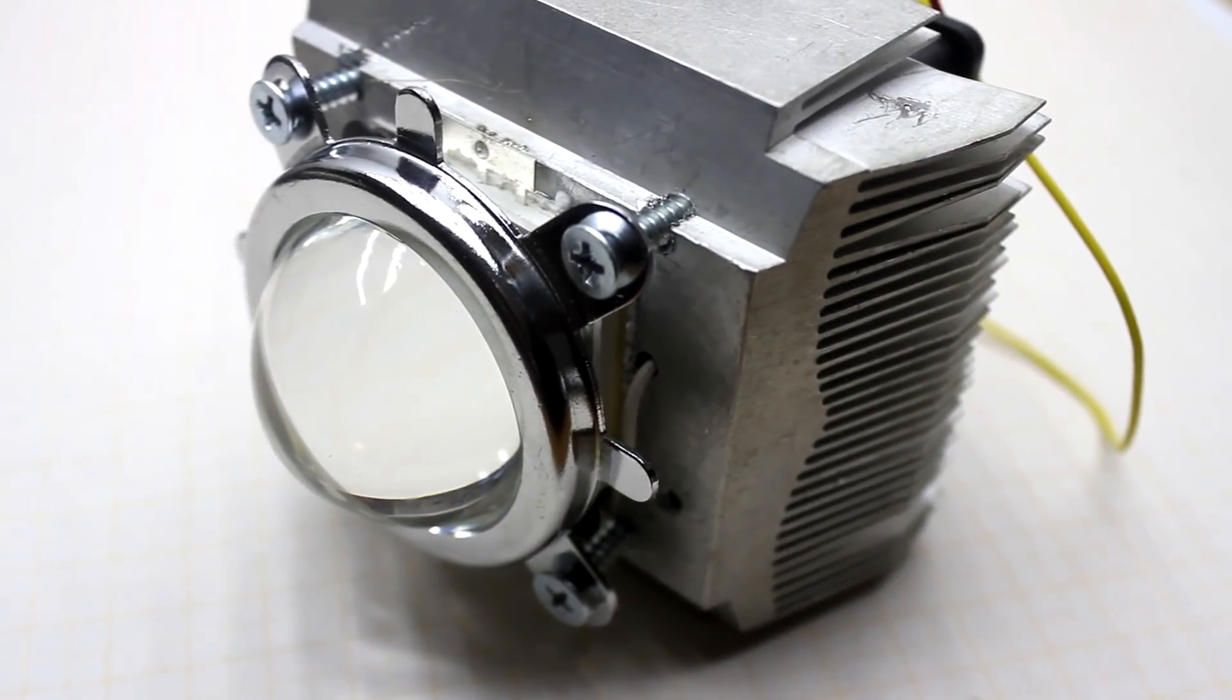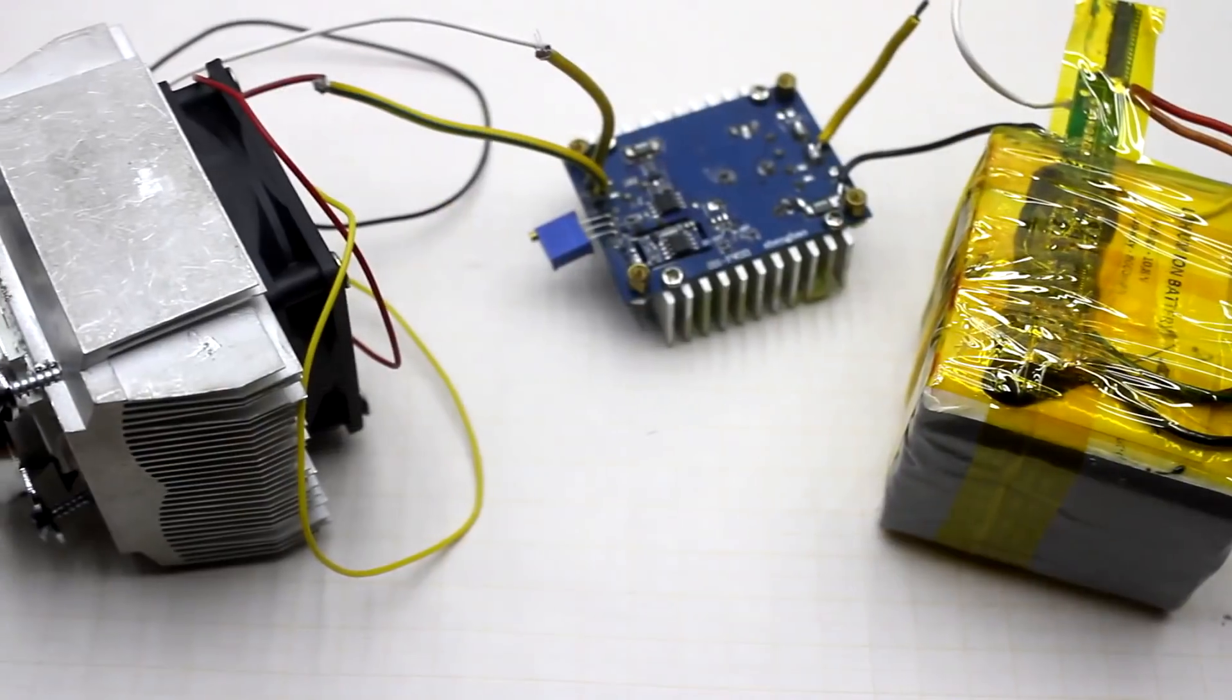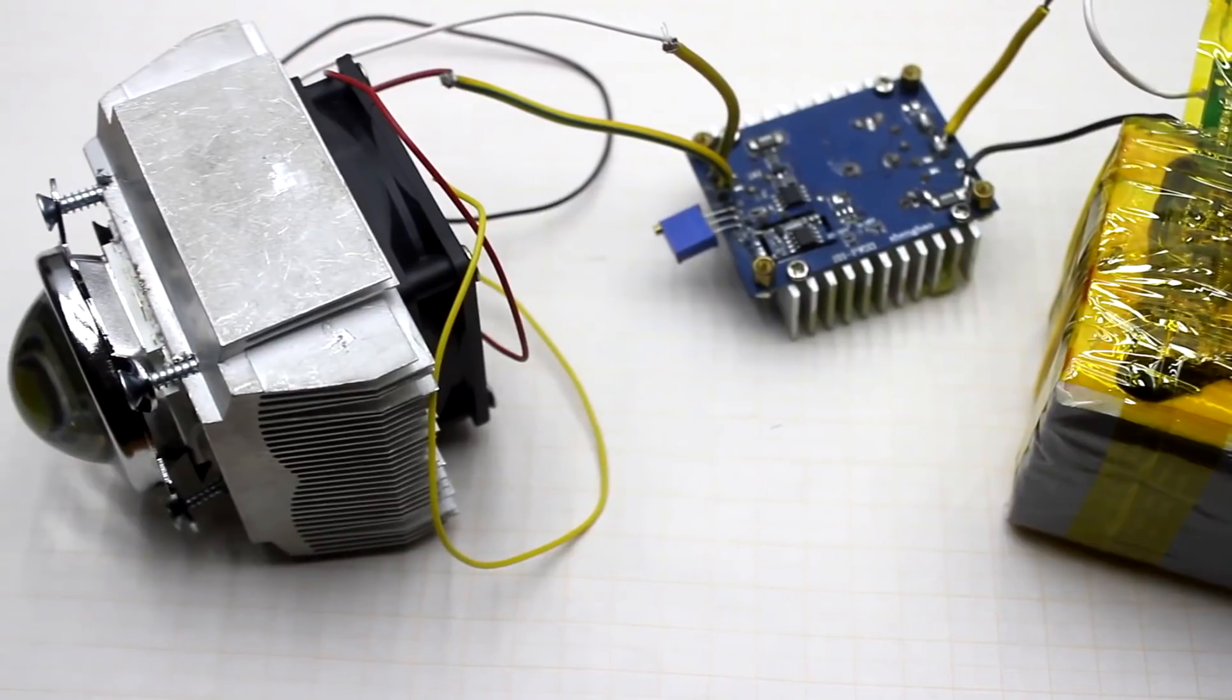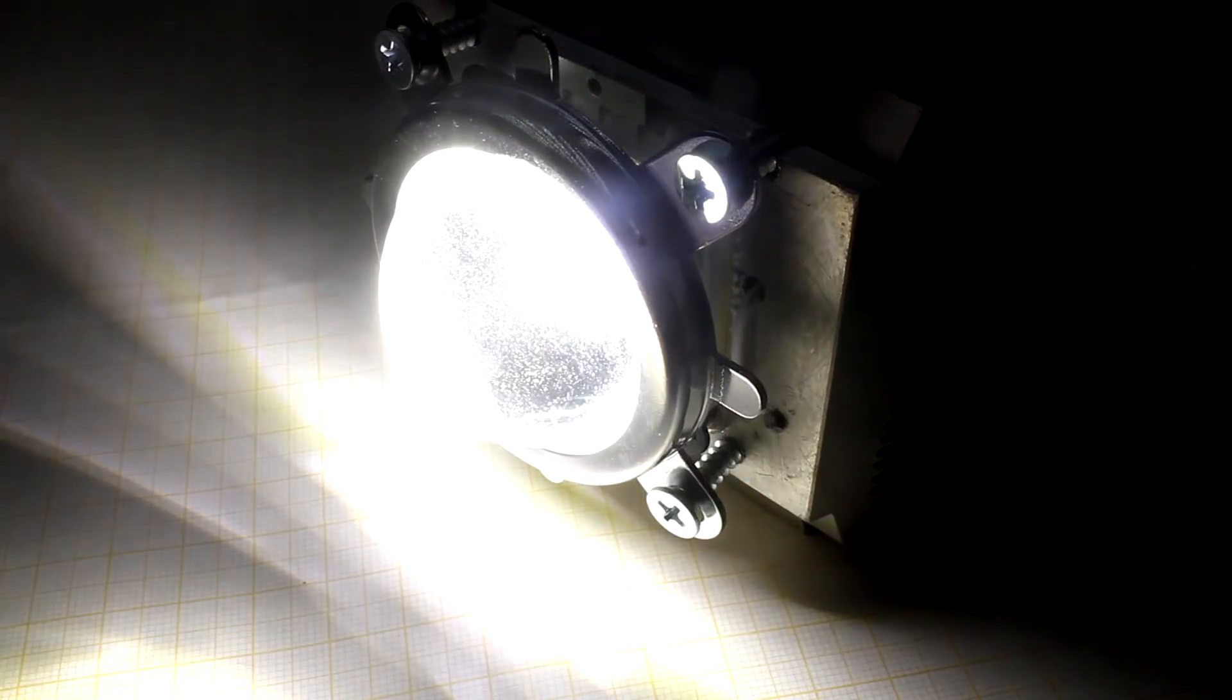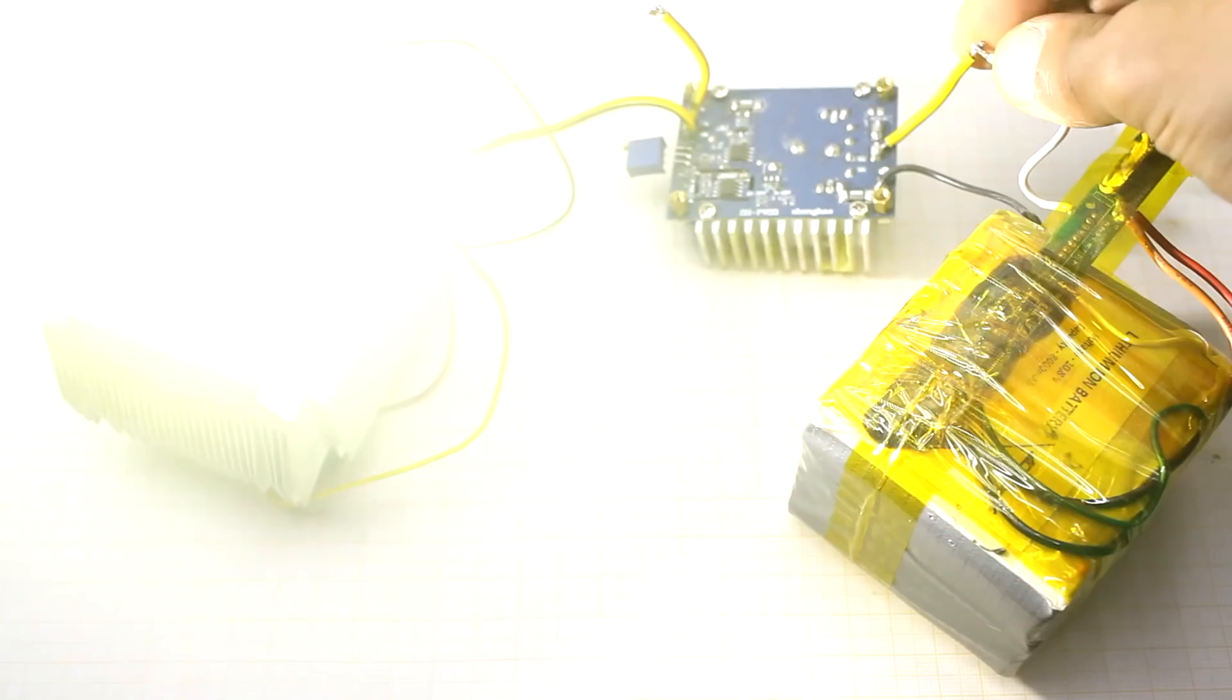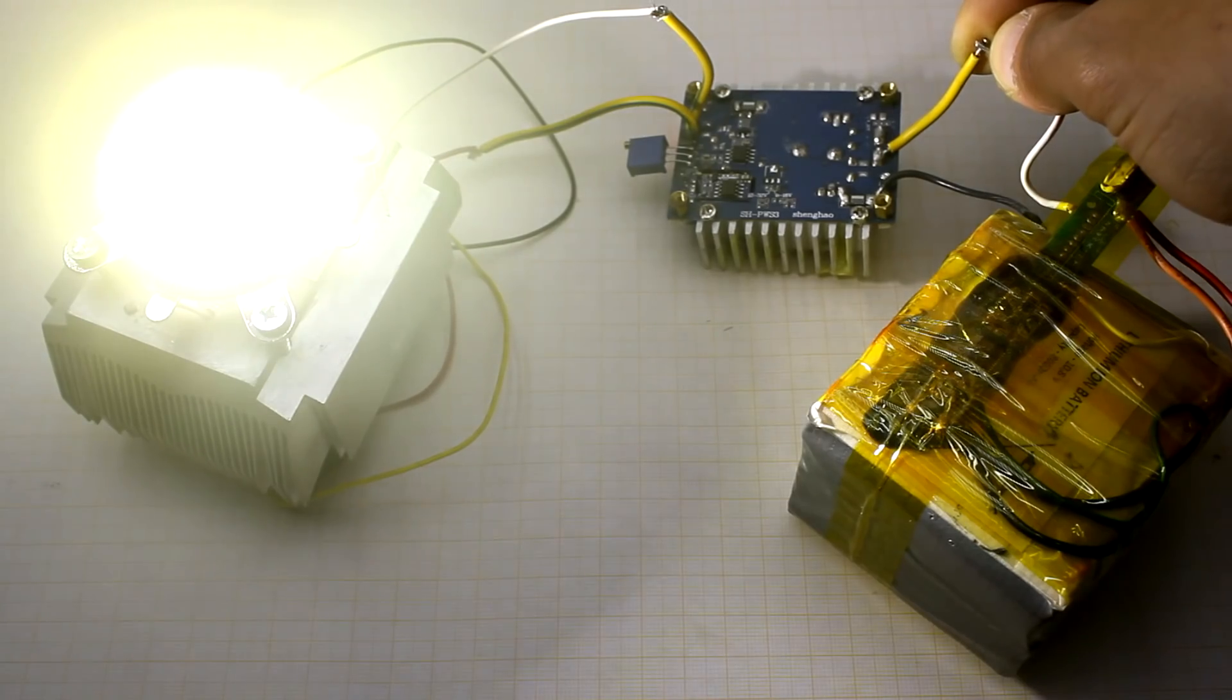But when you need to illuminate a large space, such lanterns aren't suitable because of the insufficiency of the light flux. In such situations sometimes we need spotlights, so I decided to make one for me. In fact it's a portable 100W flashlight, such were collected by many. But I am going to release two videos about this topic, during which I will explain all the nuances and problems that can be encountered during the assembly.